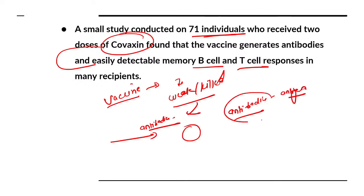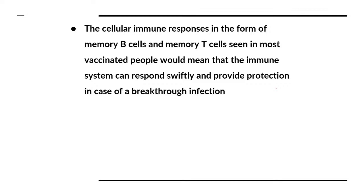Keep in mind: antibodies produced are specific to a particular antigen. One antibody is not useful against all antigens. Antibodies made against SARS-CoV-2 will not work against malaria or dengue. 'Antigen' means any foreign particle entering your body — technically called an antigen. There are several types of immune responses in our body.